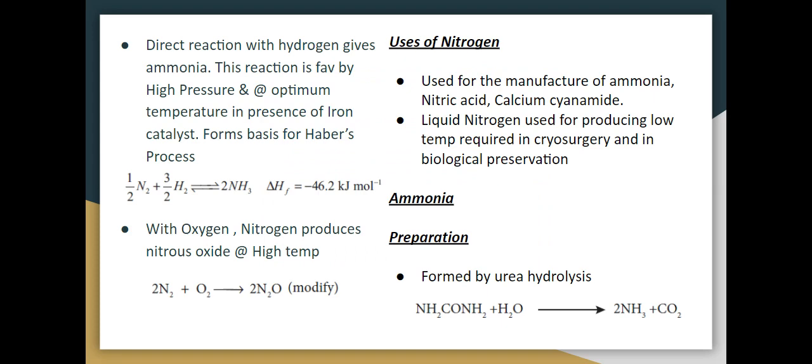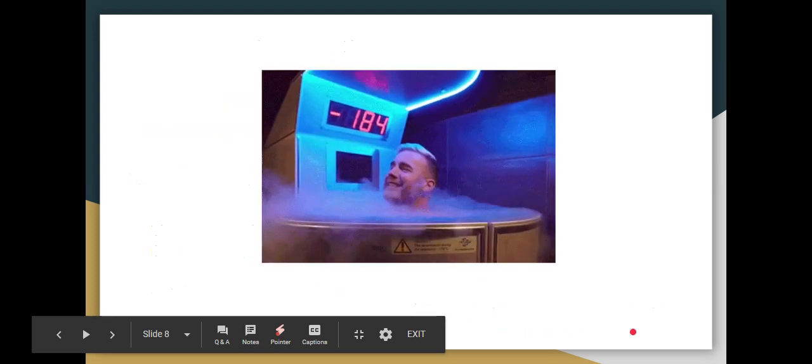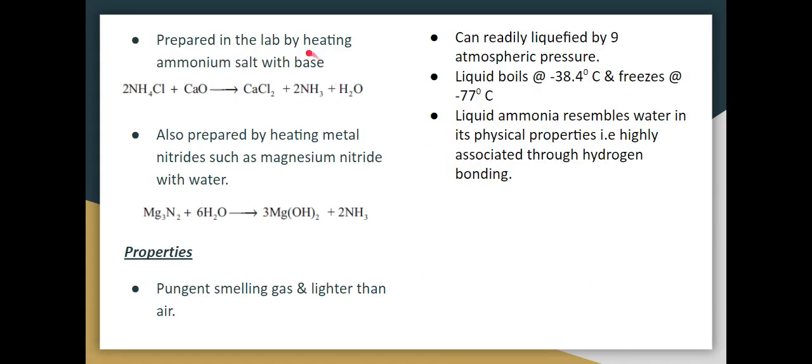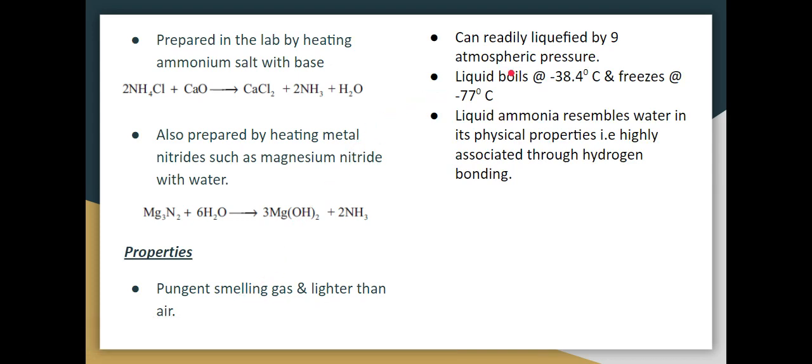Ammonia preparation: formed by urea hydrolysis. Urea hydrolysis forms ammonia. Urea plus water gives ammonia and carbon dioxide. In the lab, prepare from ammonium salt: ammonium chloride with a base like calcium oxide reacts to give calcium chloride plus ammonia plus water. Metal nitrides such as magnesium nitride react with water to give ammonia.